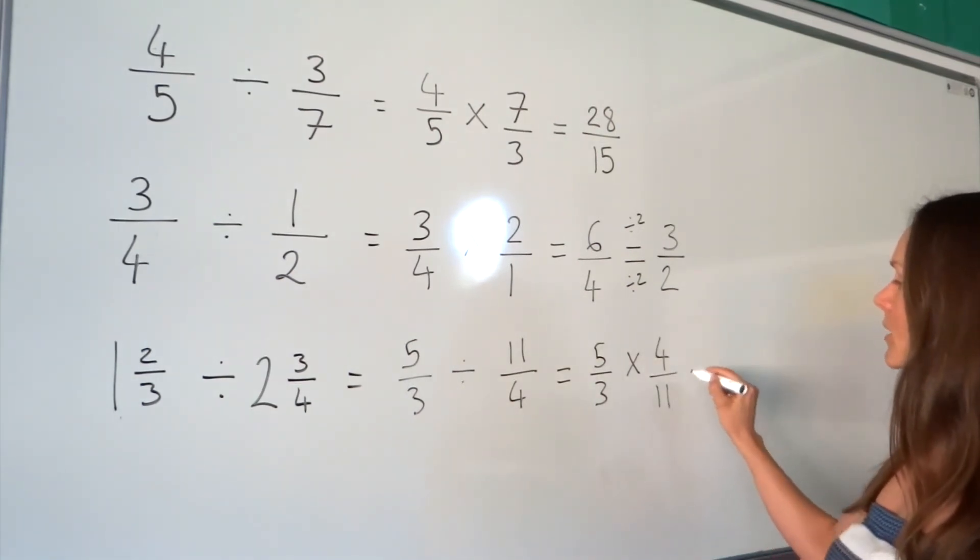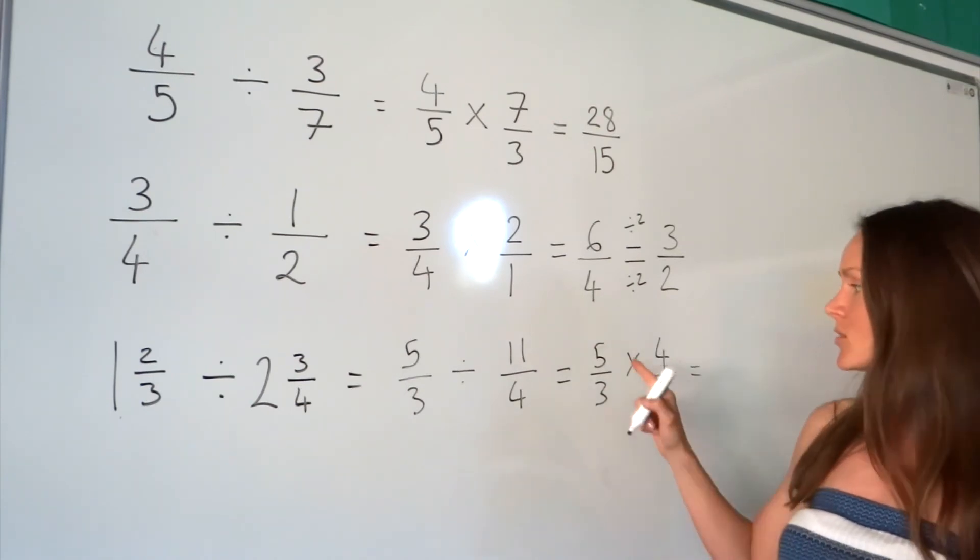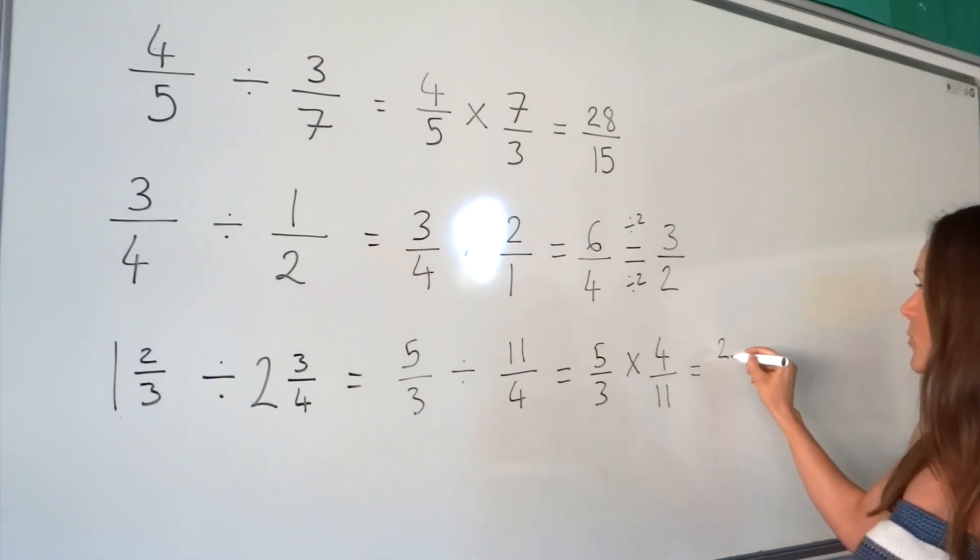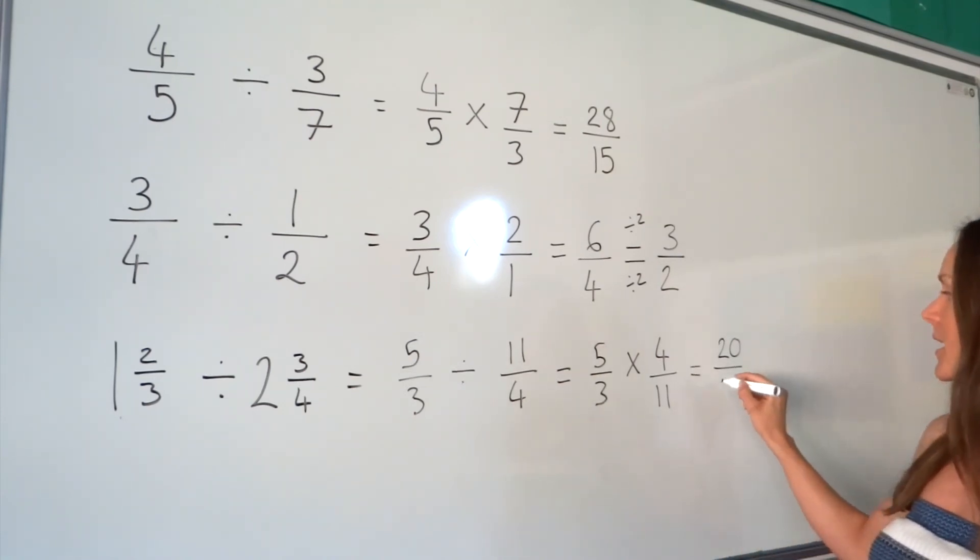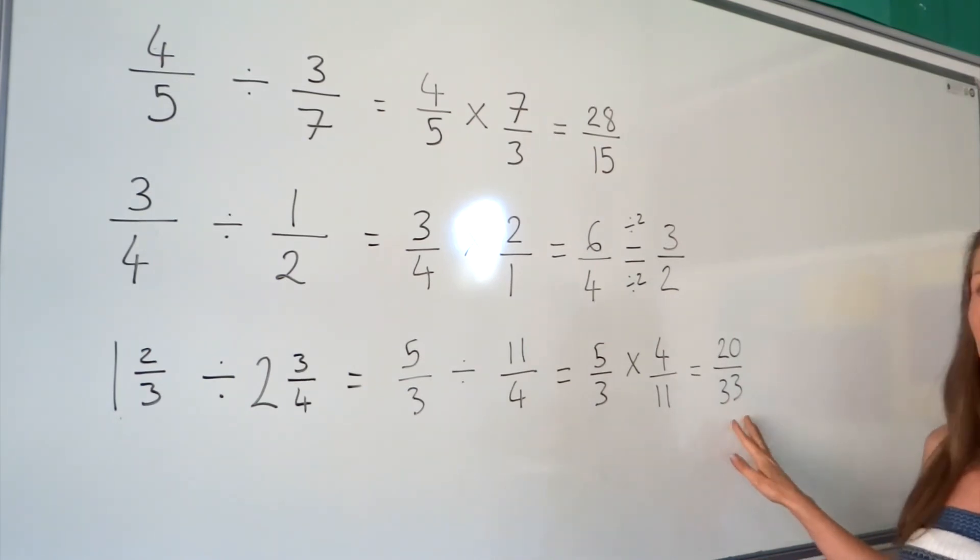So now we can multiply. Multiply the numerators together, so 5 multiplied by 4 is 20. Multiply the denominators together, so 3 multiplied by 11 is 33. And we can't simplify this fraction, so we're done.